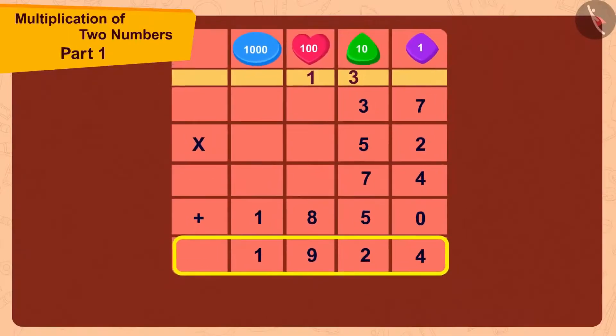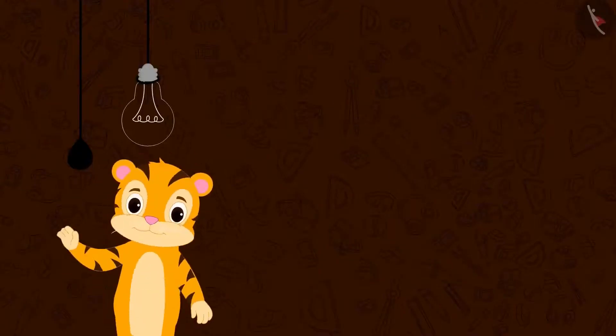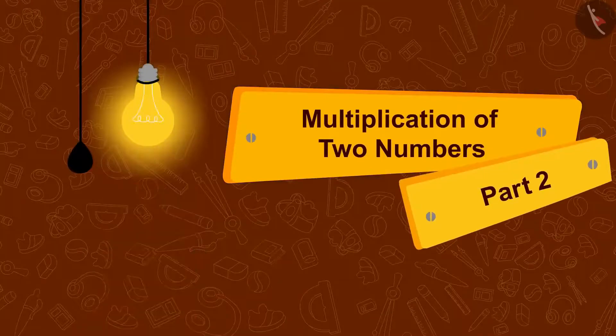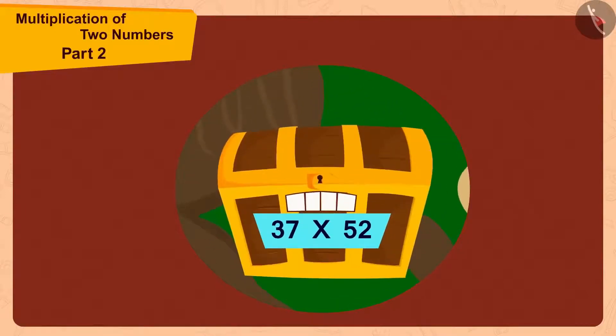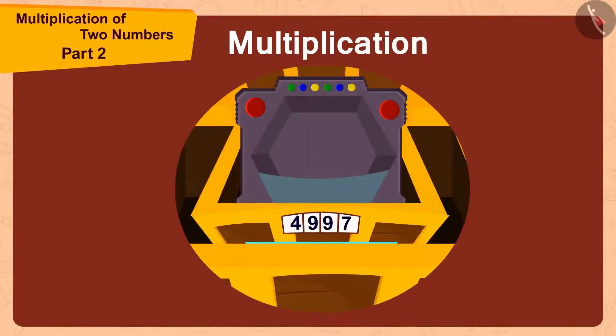In the previous video, we learned how to multiply two numbers. In this video, we will see some more interesting examples related to this. In the previous video, we saw how Bhola opened the codes of the boxes using multiplication and found a unique toy from the small box.